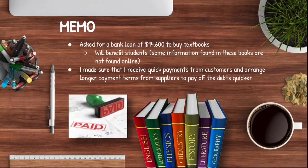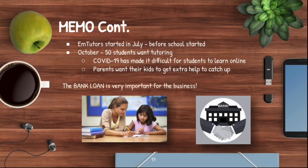In my memo, I asked for a bank loan of $14,600 to buy textbooks. Buying textbooks will benefit students because some information found in these books is not found online. I tried my best to convince the loan officer that my business deserves this loan. I wrote that I ensure quick payments from customers are received and that longer payment terms from suppliers are arranged so that I can pay off the debts faster. When writing about my return on assets, my debt ratio, and my equity ratio, I provided explanations to try to make my business's percentages seem better.